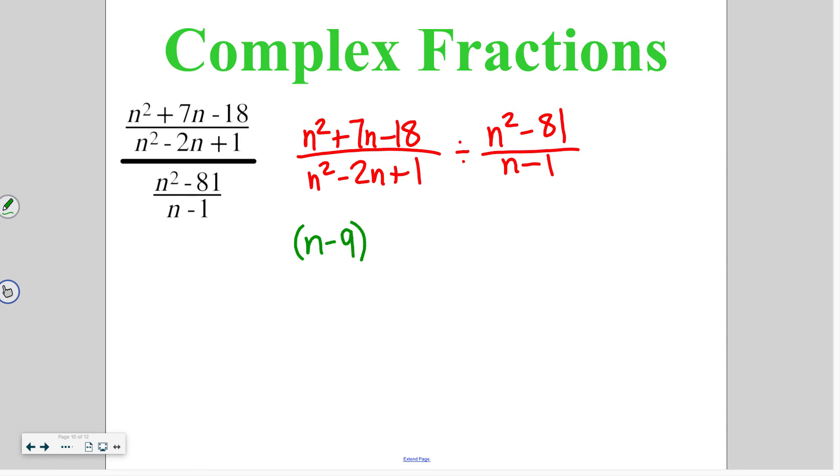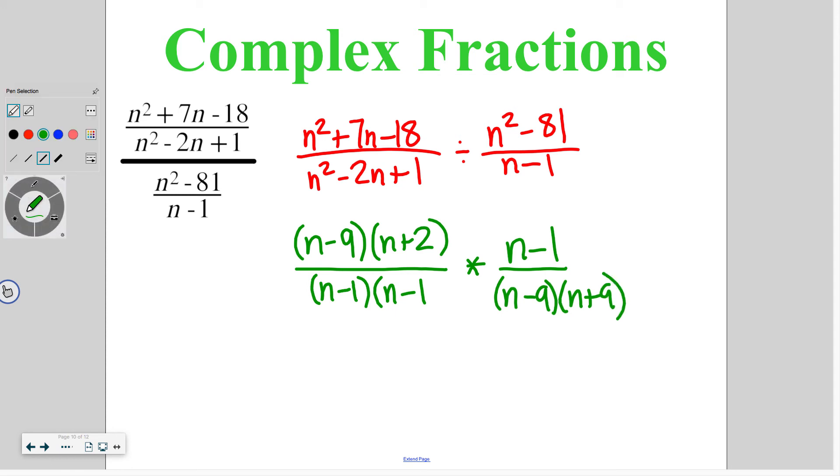Things that multiply to 1 that add to negative 2 are negative 1 and negative 1. So we kept that first fraction the same, we just factored it. Change division to multiplication. Then that second fraction needs to be flipped. n minus 1 can't be simplified. n squared minus 81 is a difference of squares. So n minus 9, n plus 9. You're going to go ahead and cancel out what you can. So we cancel out an n minus 9 and an n minus 9, an n minus 1 and an n minus 1.